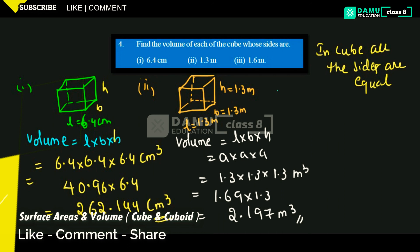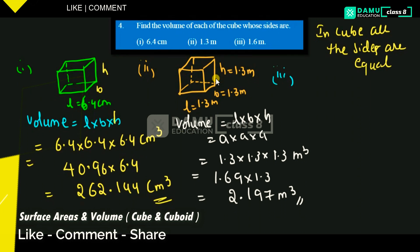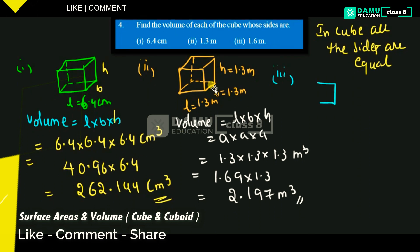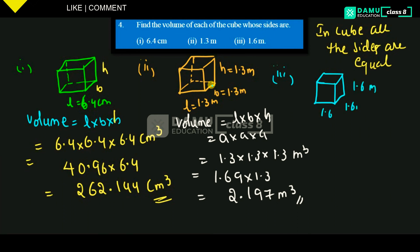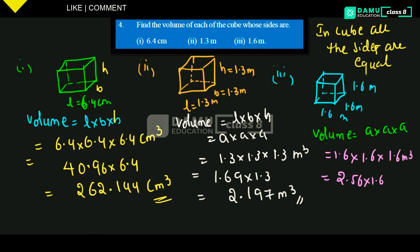Third one is 1.6 meters. Draw the cube with all sides 1.6 meters. We have to find the volume. Volume will be equal to A into A into A, that is side into side into side. 1.6 into 1.6 into 1.6 meter cube. 1.6 into 1.6 is 2.56, and 2.56 into 1.6 will be 4.096 meter cube. These are the answers.